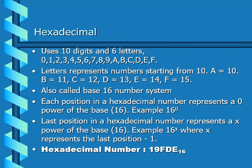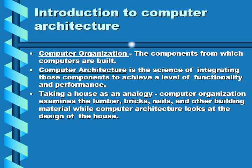Hexadecimal uses digits 0 through 9, and then from 9 onward: 10 is A, 11 is B, 12 is C, 13 is D, 14 is E, and 15 is F. We won't dwell much on hexadecimal, so let's move on.